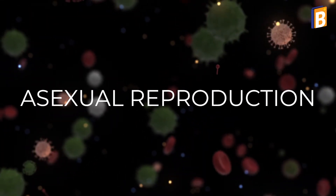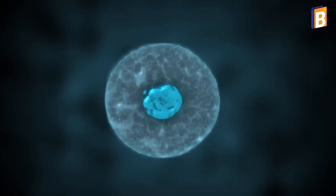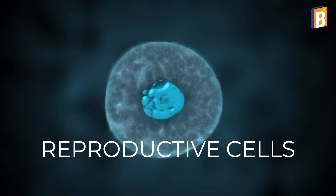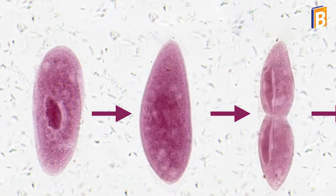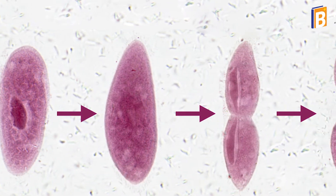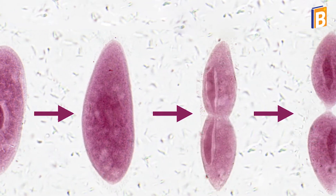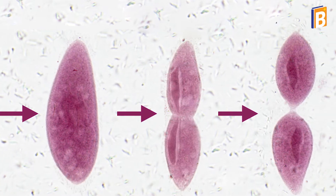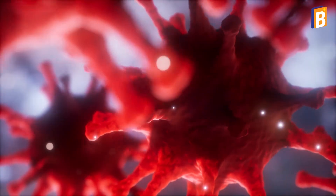Asexual reproduction is the one in which a single parent is involved and does not involve reproductive sex. The offspring formed by asexual reproduction are the exact copies of their parents. Generally, unicellular organisms like bacteria, viruses, etc. use this mode of reproduction.